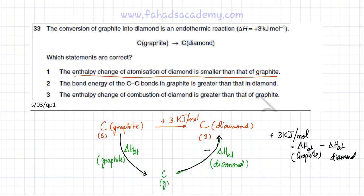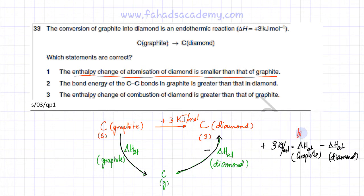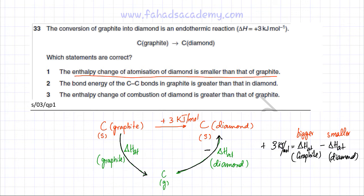Focusing on this equation: +3 kJ/mol equals the enthalpy of atomization of graphite minus the enthalpy of atomization of diamond. The only way to get a positive value is if the graphite term is the bigger value and the diamond term is the smaller value — subtracting a smaller value from a bigger one gives a positive answer. So this Hess cycle proves that the enthalpy of atomization of graphite is bigger, and the enthalpy of atomization of diamond is smaller.